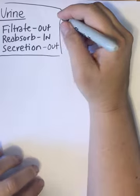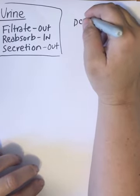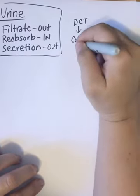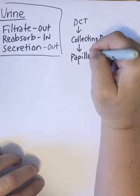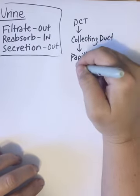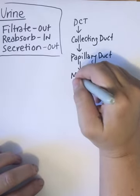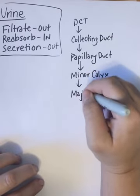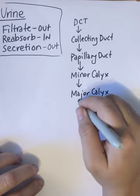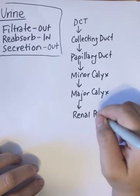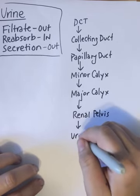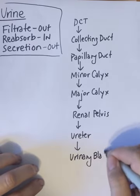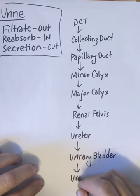Urine is going to pass from the distal convoluted tubule into the collecting duct, into the papillary duct. The papillary duct goes into the minor calyx, which goes into the major calyx, which goes into the renal pelvis. The renal pelvis empties into the ureter, the ureter empties into the urinary bladder, and to exit it goes out the urethra.